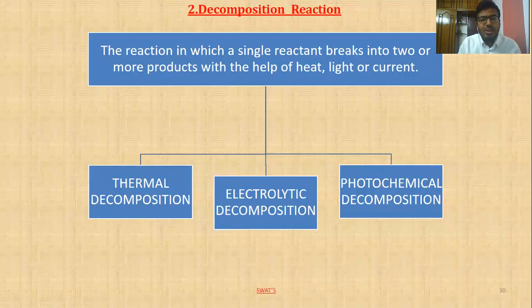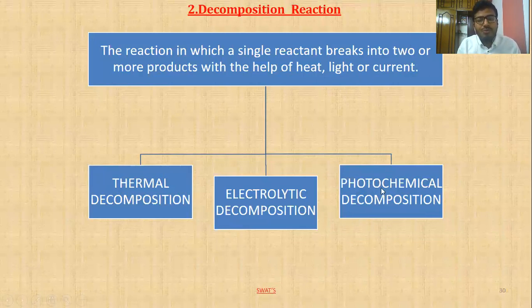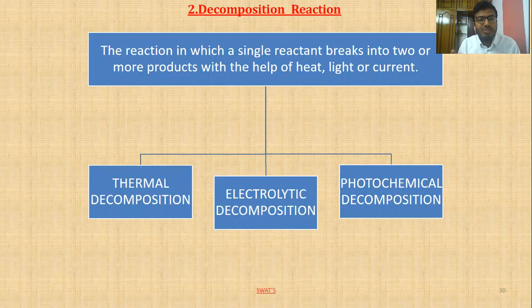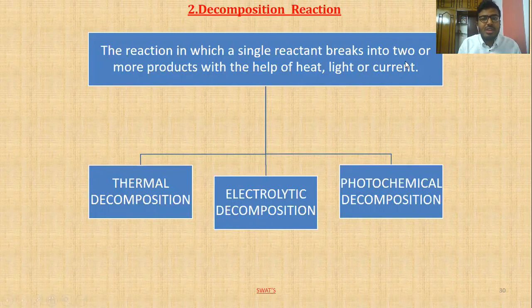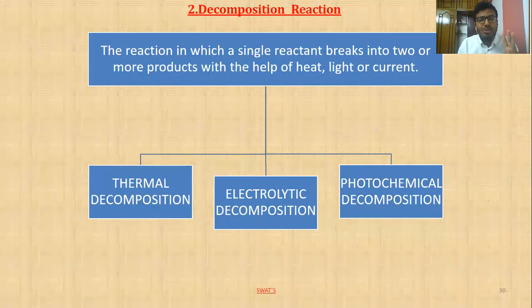There are three ways in which we can decompose a reactant to form two or more products. The first method is heat — when we use heat, that method is known as thermal decomposition. Thermal means heat. If it is with the use of light — sunlight — it is called photochemical decomposition. Sunlight energy comes in packets of energy known as photons, and from that word, photochemical decomposition arises. The third one is current — when we use current to break down a reactant, it is known as electrolytic decomposition.